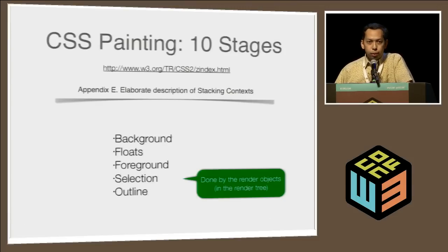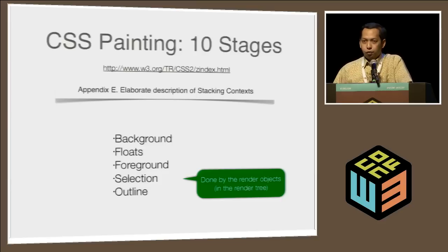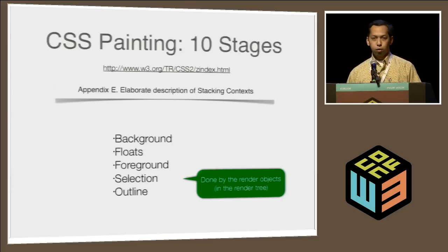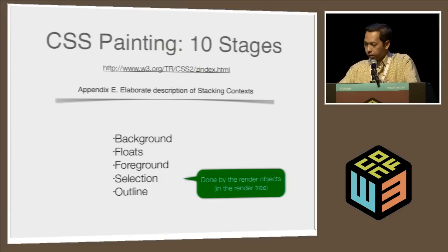CSS painting is complicated — how many of you have read the full CSS specification? All of this needs to be implemented in the browser, from background to selection and outline — that's part of the ten stages of painting — and this is all done by the render objects.